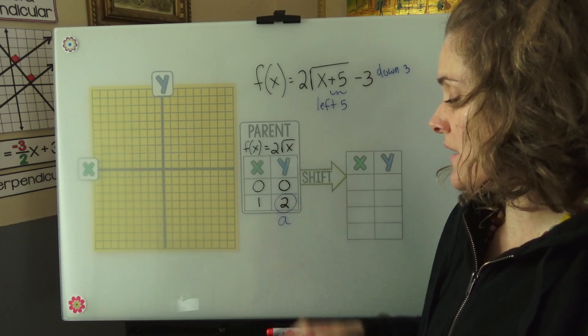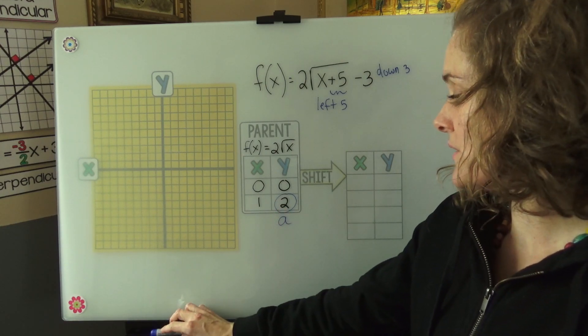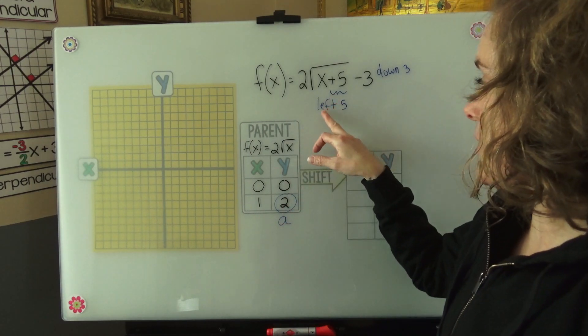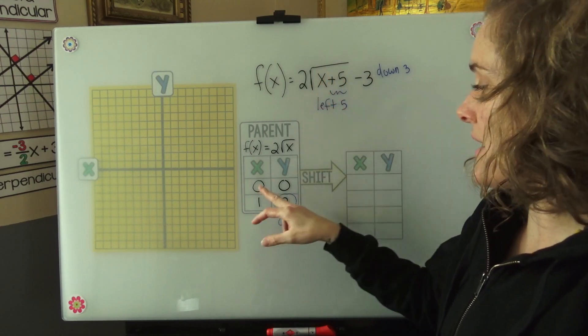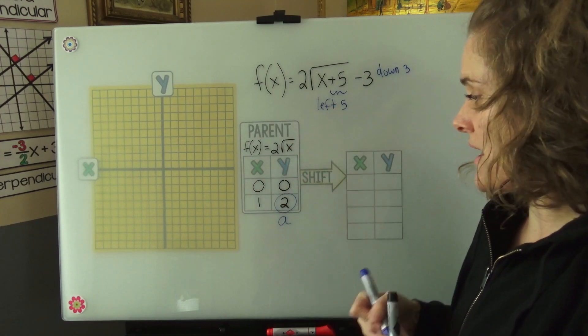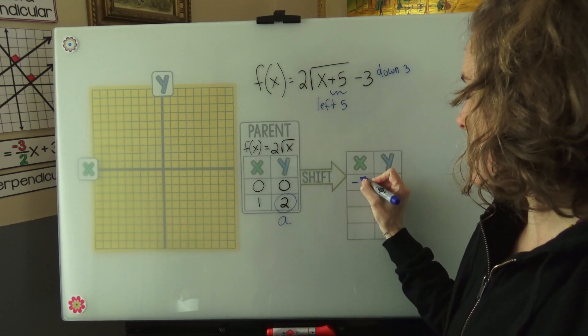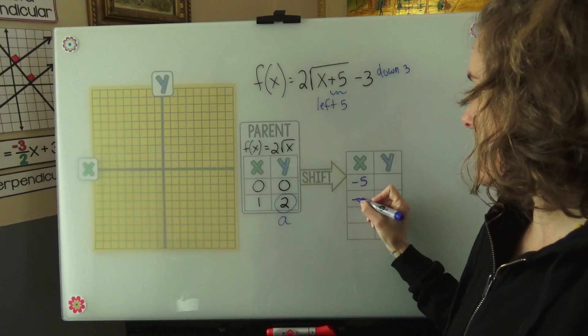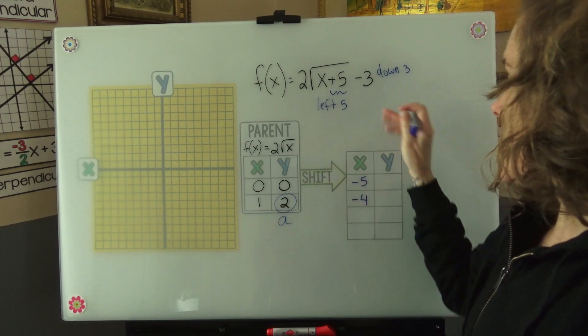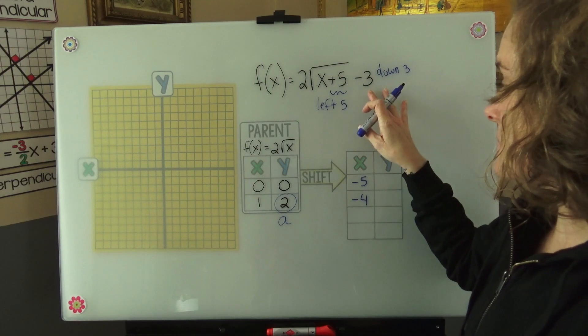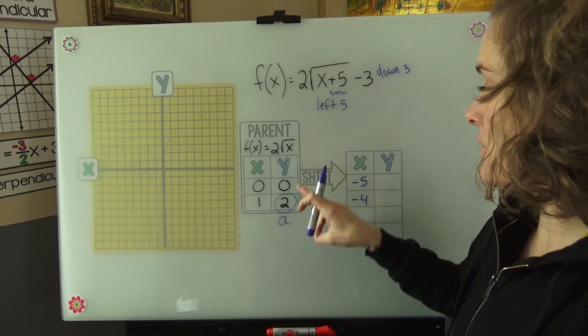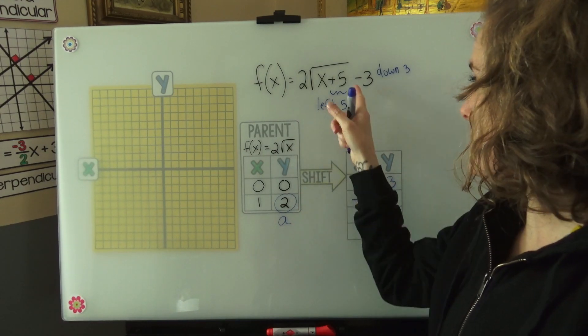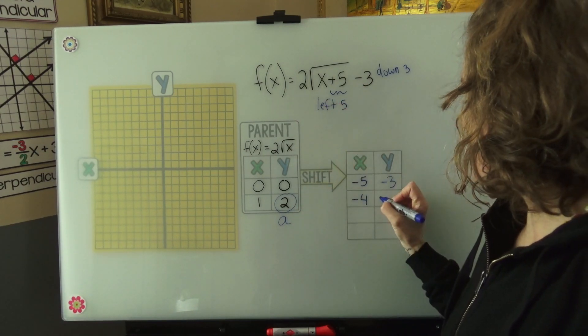So now let's shift the function. We see that we're going left 5 to all the x values. So 0 minus 5 is negative 5. 1 minus 5 is negative 4. And we're going to shift down our y values. So 0 minus 3 is negative 3. And 2 minus 3 is negative 1.